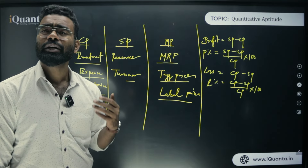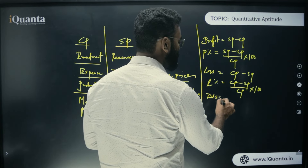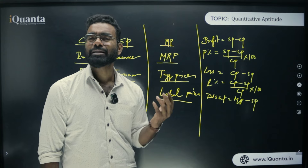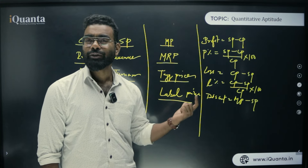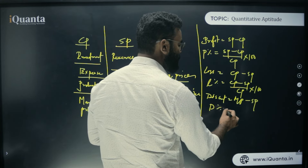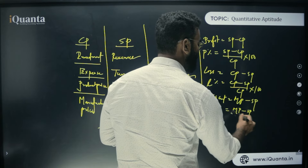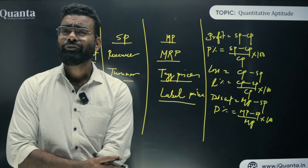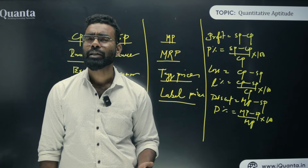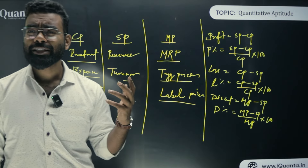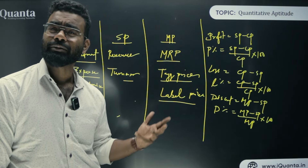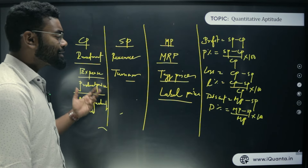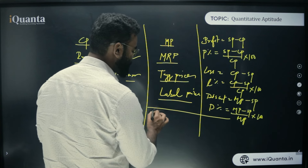Discount = Mark Price − Selling Price. Discount percentage = (MP − SP) / MP × 100. Remember, if nothing is mentioned, discount is always calculated on mark price. For example, if the tag price of a T-shirt is 400 and you get 25% discount, that 25% is based on the mark price of 400, not the selling price.